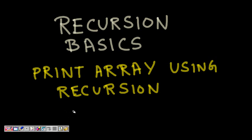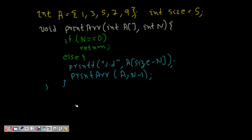The first problem is to print the array in simple order from lower index to higher index, and the other is to print in reverse order. If you are given int a[5] = {1, 3, 5, 7, 9} and size is 5, you need to print a[0], a[1], a[2], a[3] till a[n-1] where n is the size — using recursion.